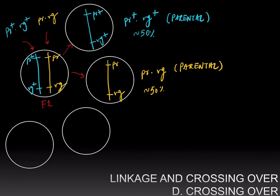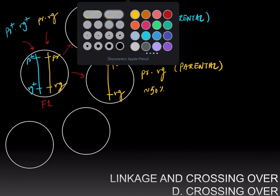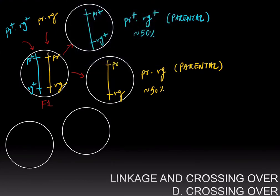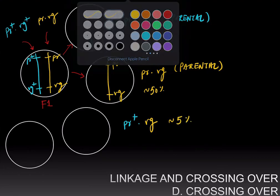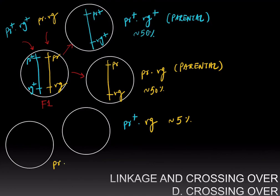However, we do know that in Morgan's experiment, recombinants were produced. Purple-plus vestigial was produced at about 5% frequency, and purple vestigial-plus was also produced at about 5% frequency. So it's not that recombinants are never produced — it's just that recombinants are rarer than what you would expect with independent assortment.